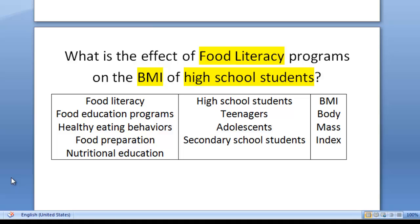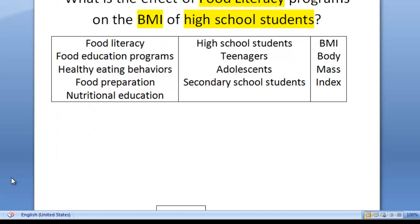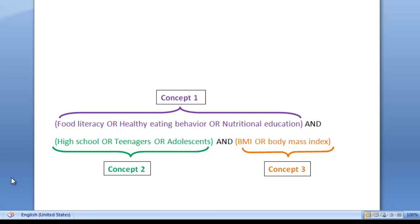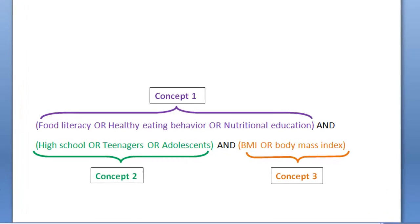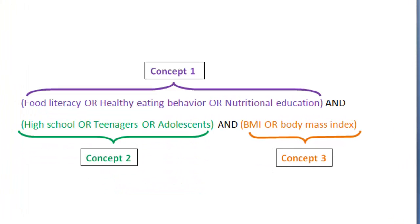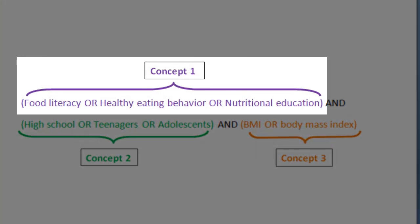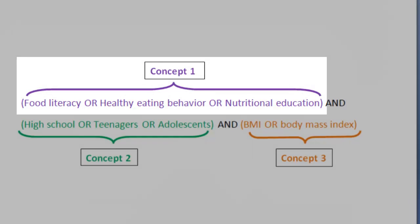Now that we have some synonyms, we can start structuring a search. We are going to place all the similar terms together within brackets, and then join the groups of terms together. This is concept 1. It contains the words that describe the concept of food literacy, but broadened out to include the words nutritional education or healthy eating behavior. Because essentially, this is what the concept of food literacy is describing.